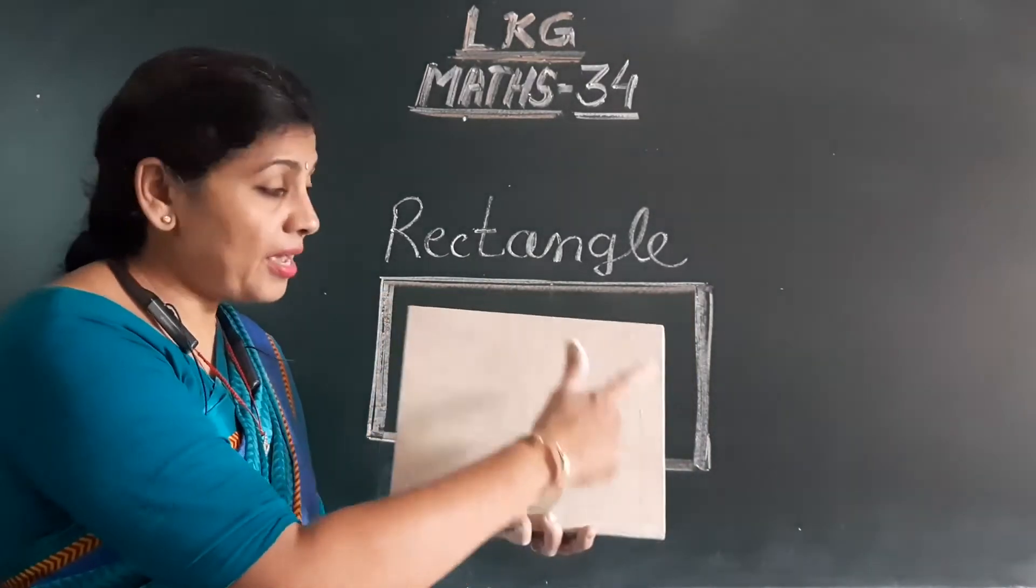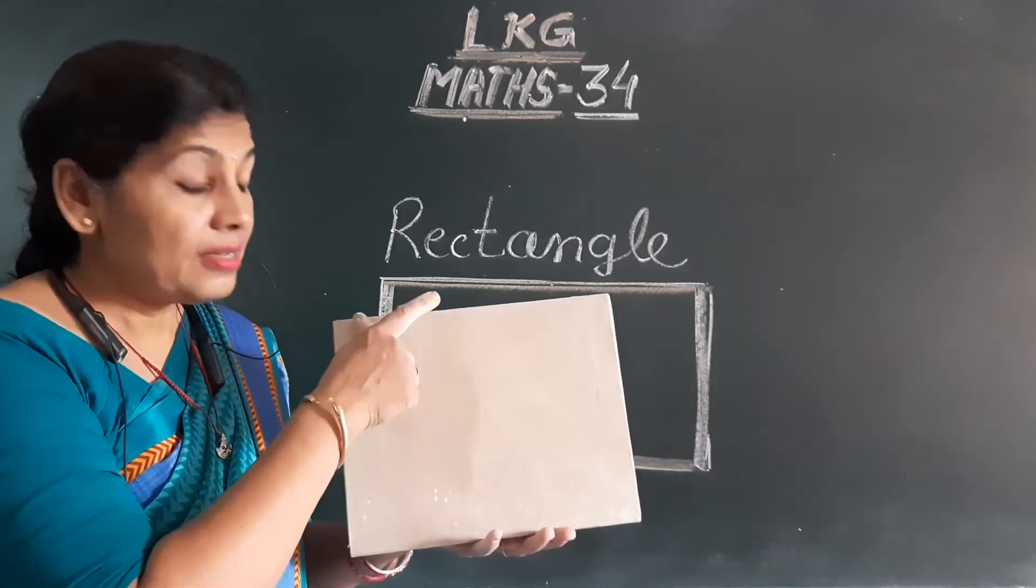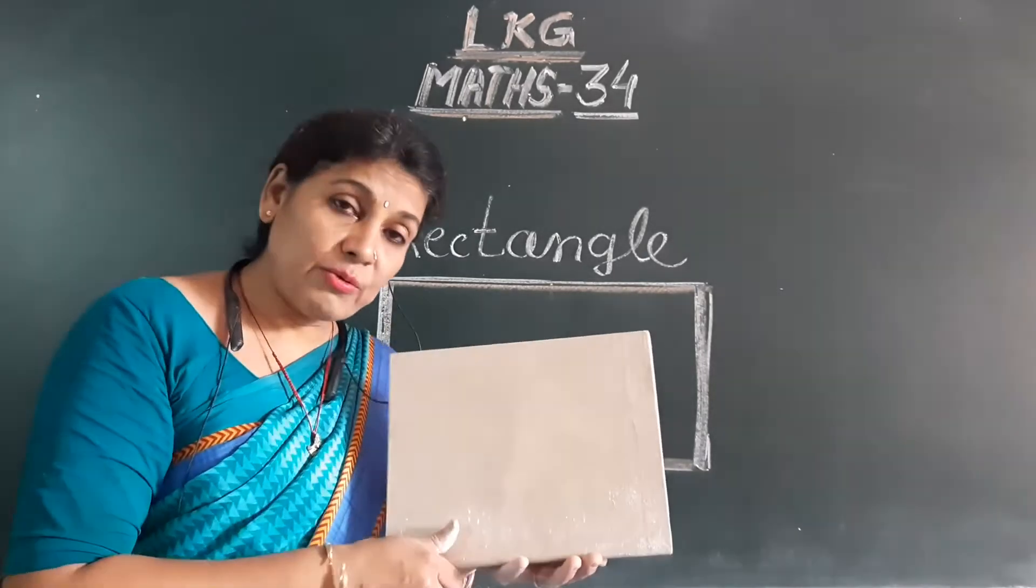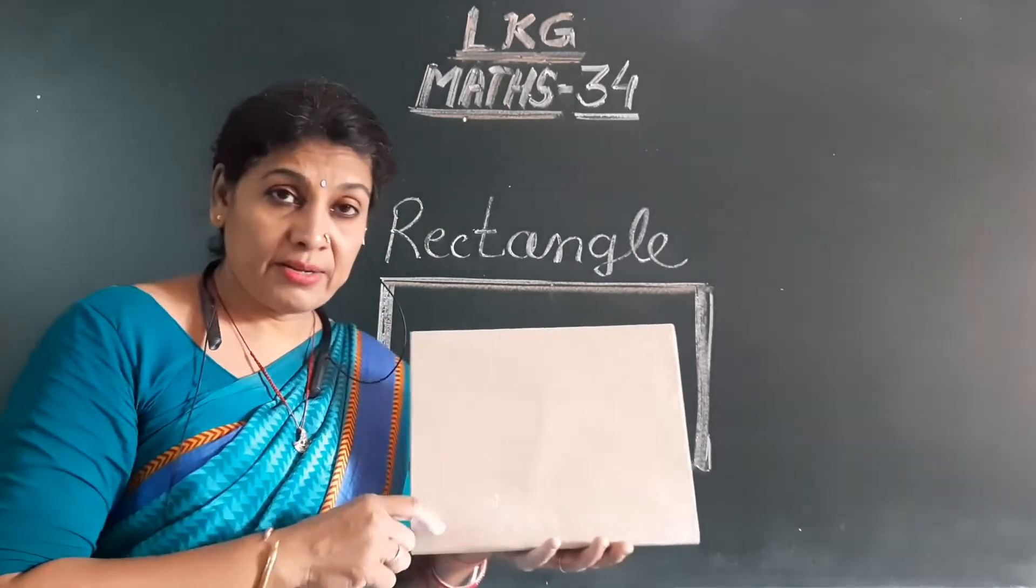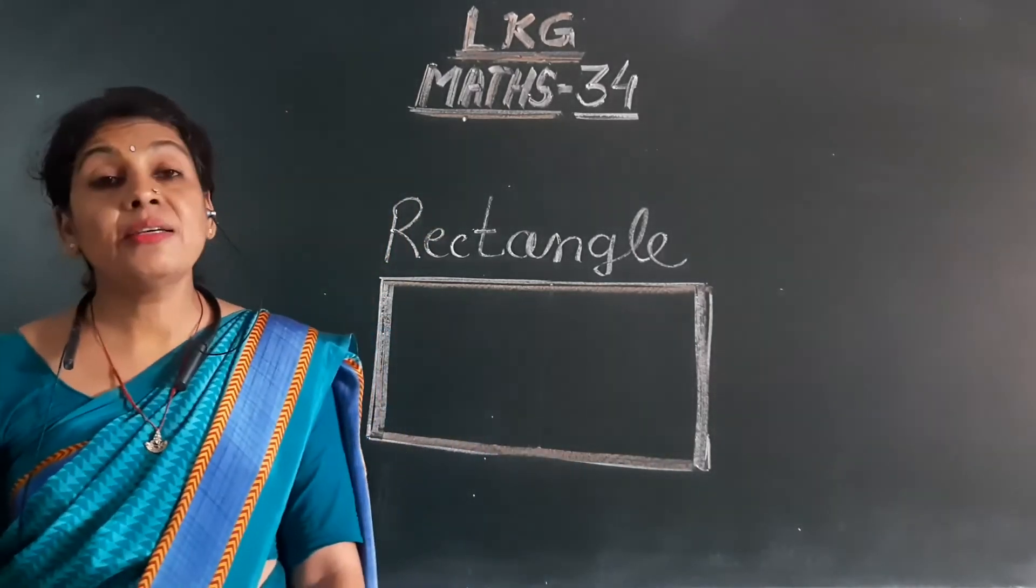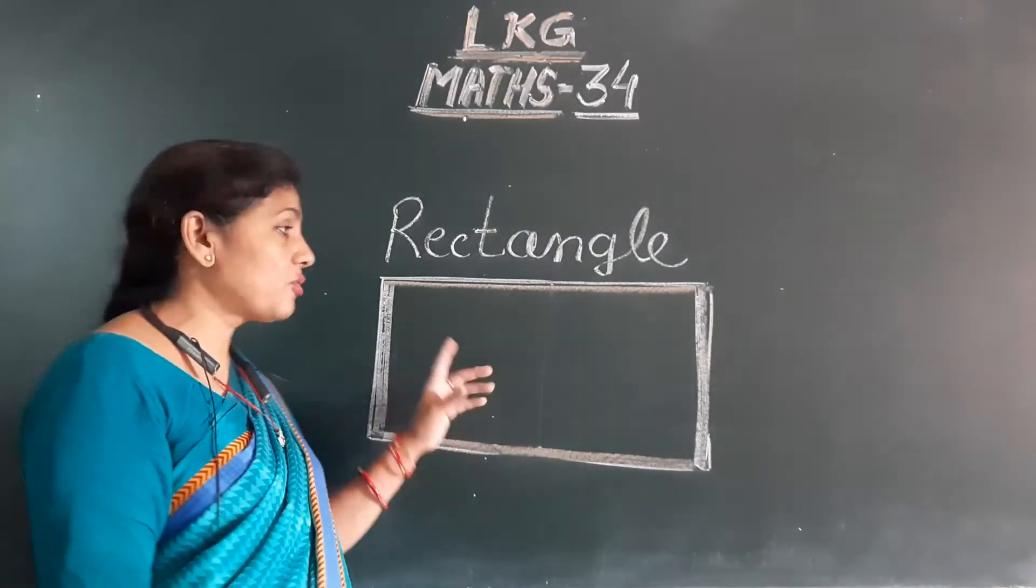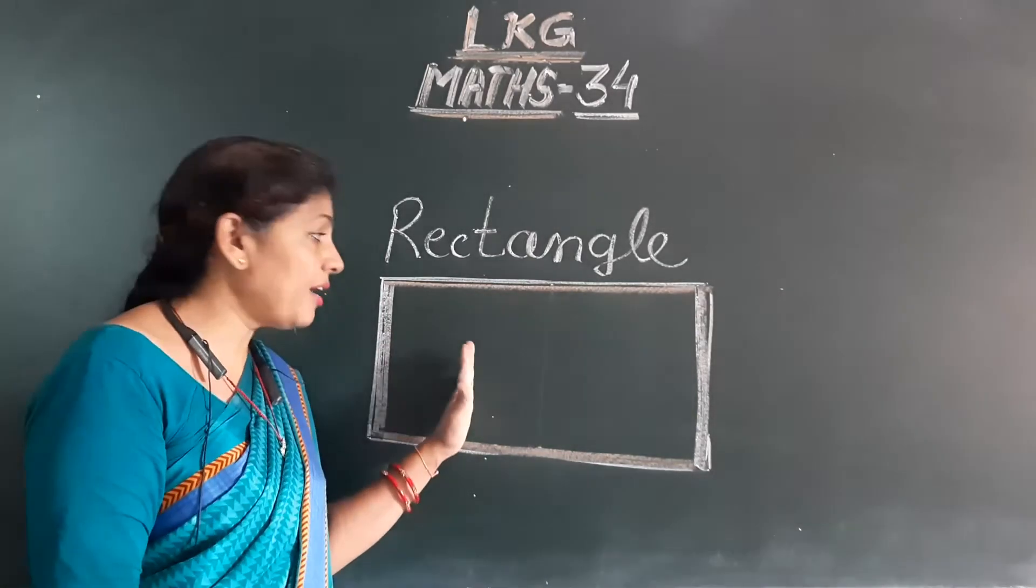If we will take another copy or book, this one, it is also in rectangle shape. Okay? These two lines are the same and these two lines are the same. That means in rectangle, both the lines up and down side and from left and right side, both side lines are the same. But in square, four lines are equal.